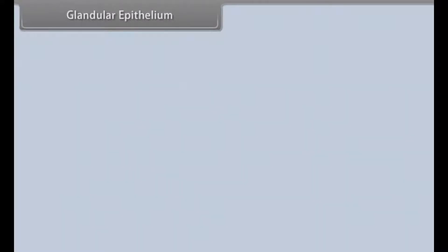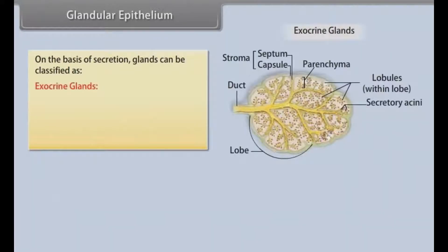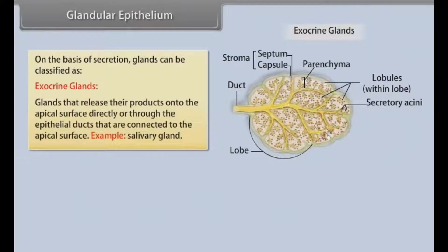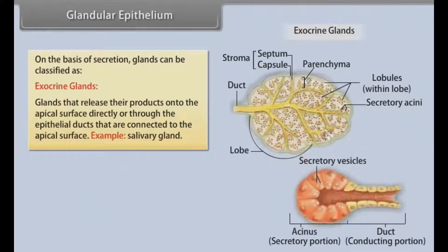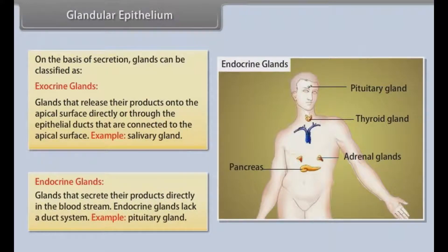On the basis of secretion, glands can be classified as exocrine glands and endocrine glands. Exocrine glands release their products onto the apical surface directly or through epithelial ducts connected to the apical surface — for example, the salivary gland. Endocrine glands secrete their products directly into the bloodstream and lack a duct system — for example, the pituitary gland.